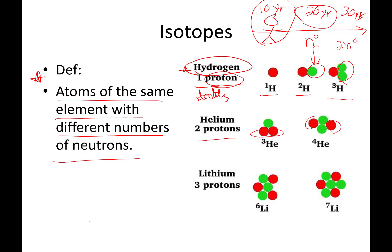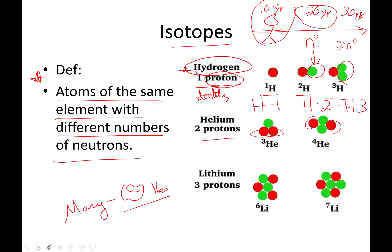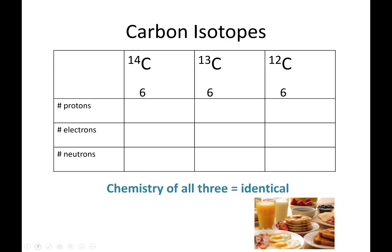The nice thing about isotopes is we tend to say the name of the element followed by its mass number — so hydrogen-1, hydrogen-2, hydrogen-3. I'm really grateful we don't do that with people. I would be sad if I had to introduce myself as Mary followed by my weight in pounds.